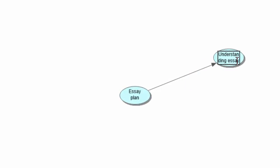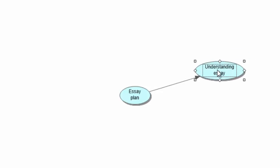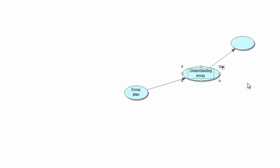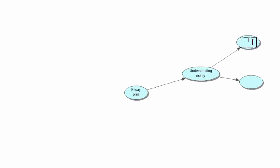The first one we can put in there is 'Understanding a question.' You might have an essay to do — the first thing you need to do is actually understand what you are going to put in your essay. So let's create subtitles off of there. Click Control, click once on 'Understanding' again, hold Control, left-click on the mouse again and we have two more symbols.